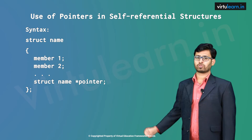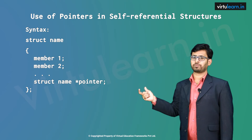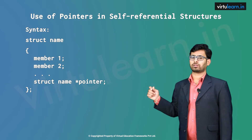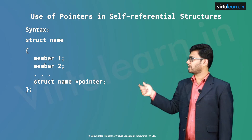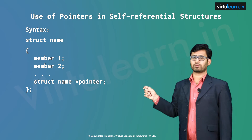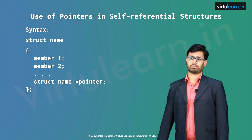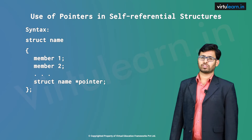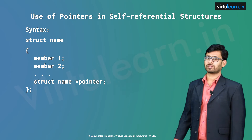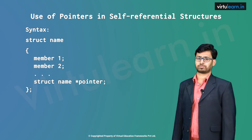So here: struct name *ptr (struct name *pointer) followed by semicolon, close the structure definition with a name. This will represent the self-referential structure.